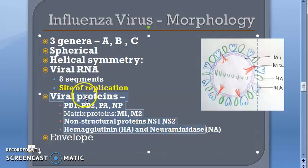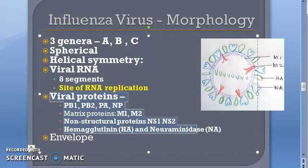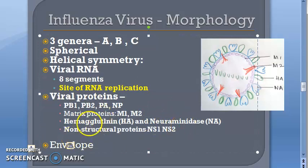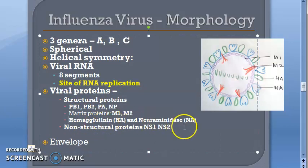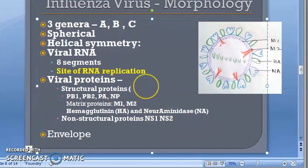Now moving on to viral proteins. The influenza virus contains eight proteins: PB1, PB2, PA, NP, HA, NA, M1, and M2. There are also non-structural proteins NS1 and NS2. So there are eight structural proteins: PB1, PB2, PA, NP, the matrix proteins M1 and M2, hemagglutinin HA, and neuraminidase NA. Non-structural proteins are NS1 and NS2.